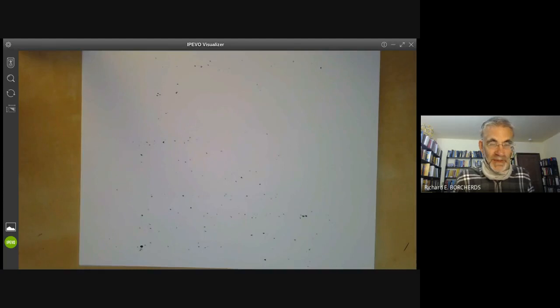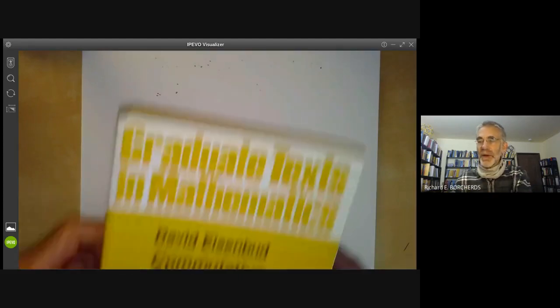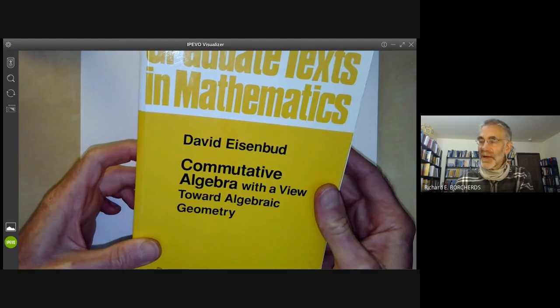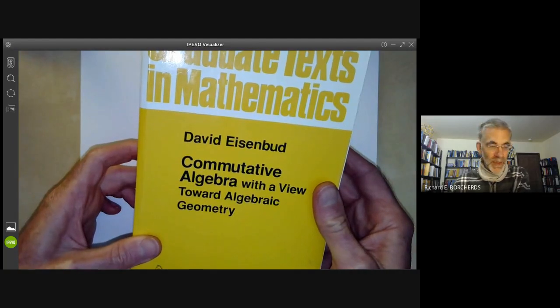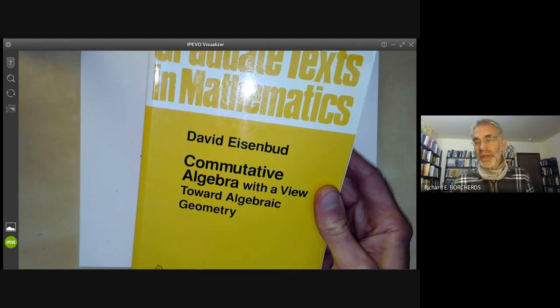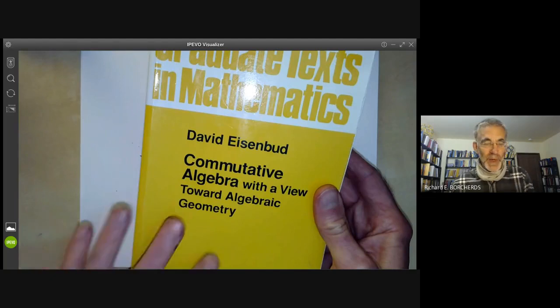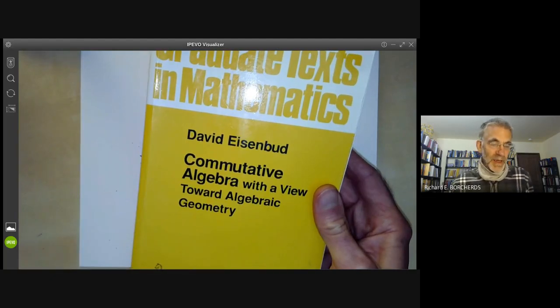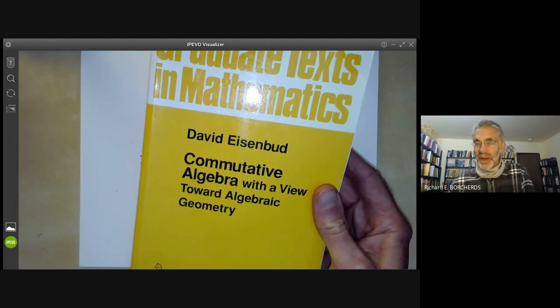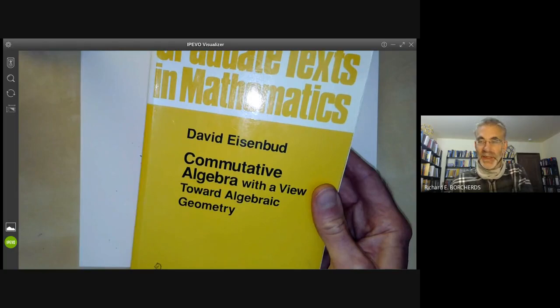Next, I'll discuss some background reading for the book. First, the course is mainly following the book by Eisenbud on commutative algebra with a view towards algebraic geometry. In particular, most of the topics I will be talking about are somewhere in this book. In the description below the video, I might try and remember to list some background reading from this book and also some exercises in case you want exercises.